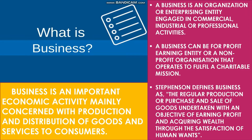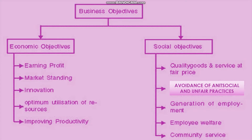This is one of the important definitions — you have to be thorough with this. Now let's move on to objectives of business. There are two types of objectives: economic objectives and social objectives. The main objective of any business is to earn profit. Under economic objectives, the first is to earn profit. Second, market standing — any business wants to withstand in the market. Third, innovation — new ideas or new techniques. Fourth, optimum utilization of resources.